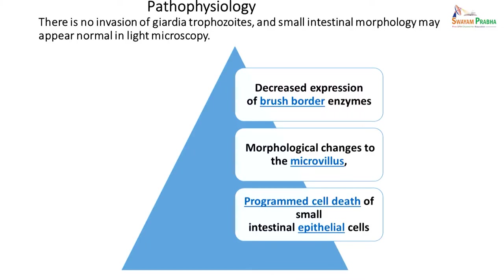As far as pathophysiology is concerned, there is no invasion by Giardia trophozoites, and small intestine morphology appears normal under light microscopy. The main mechanisms by which it causes damage include decreased expression of brush border enzymes, morphological changes to microvilli, and programmed cell death of small intestinal epithelial cells, which ultimately leads to diarrhoea.